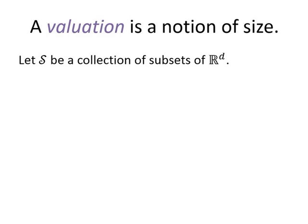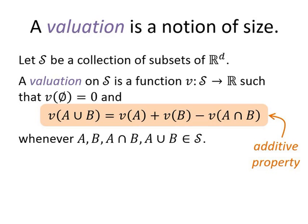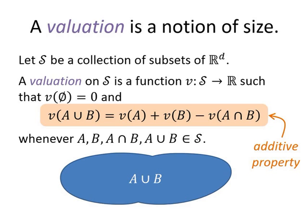A valuation is a notion of size. Suppose I have a collection S of subsets of d-dimensional Euclidean space. A valuation on S is a function V that assigns a real number to each set such that the empty set gets assigned 0, and the valuation of the union of two sets A and B equals the valuation of A plus the valuation of B minus the valuation of the intersection of A and B. This is called the additive property, or the inclusion-exclusion principle.